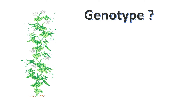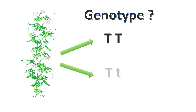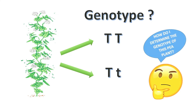Hi guys, here is a challenge for you. Can you tell for sure the genotype of this pea plant? No — this is because an individual with a dominant phenotype, in this case being tall, can either be of homozygous dominant genotype (capital T, capital T) or of heterozygous genotype (capital T, small t). So, how do you determine the genotype of an individual with a dominant phenotype?